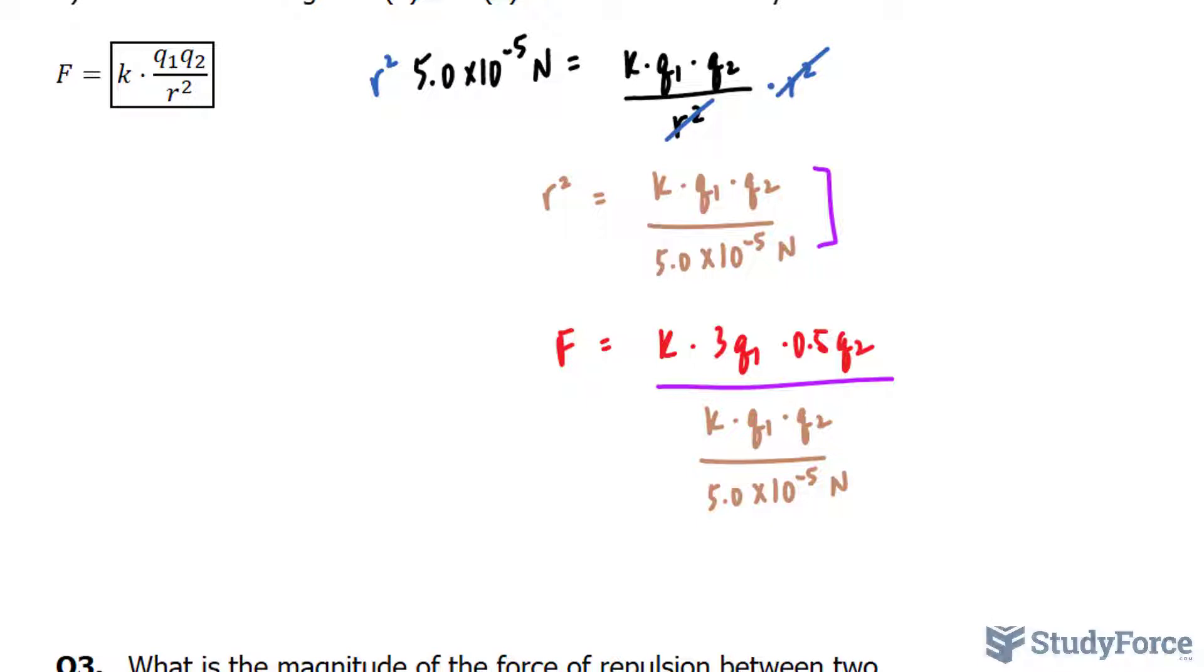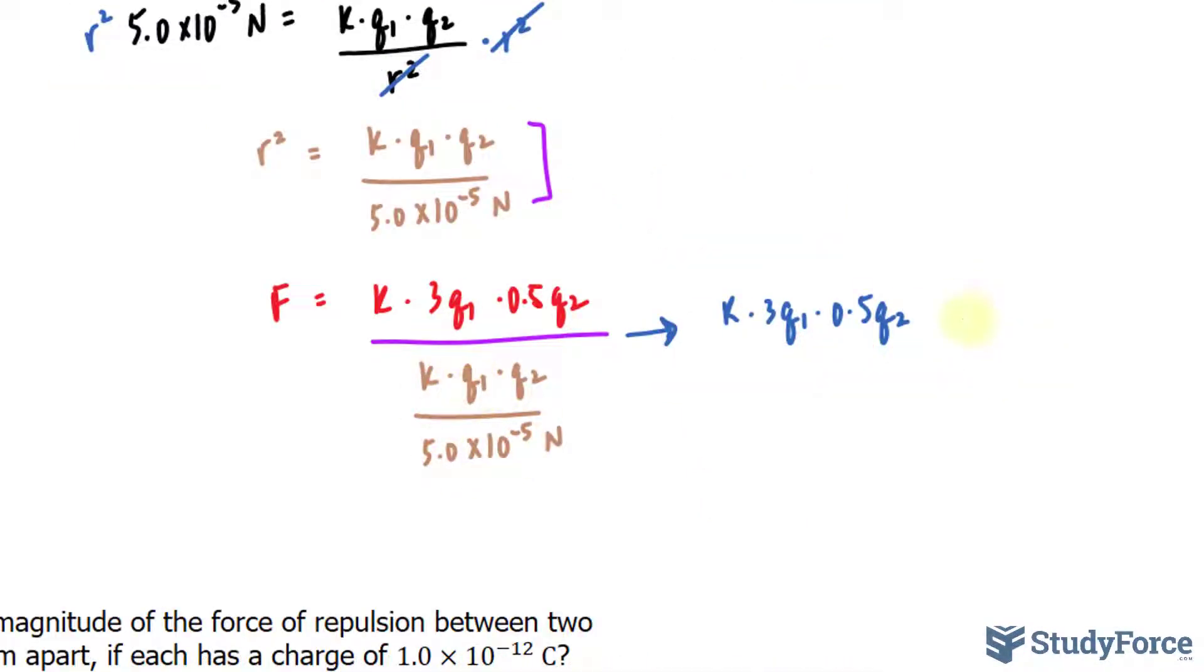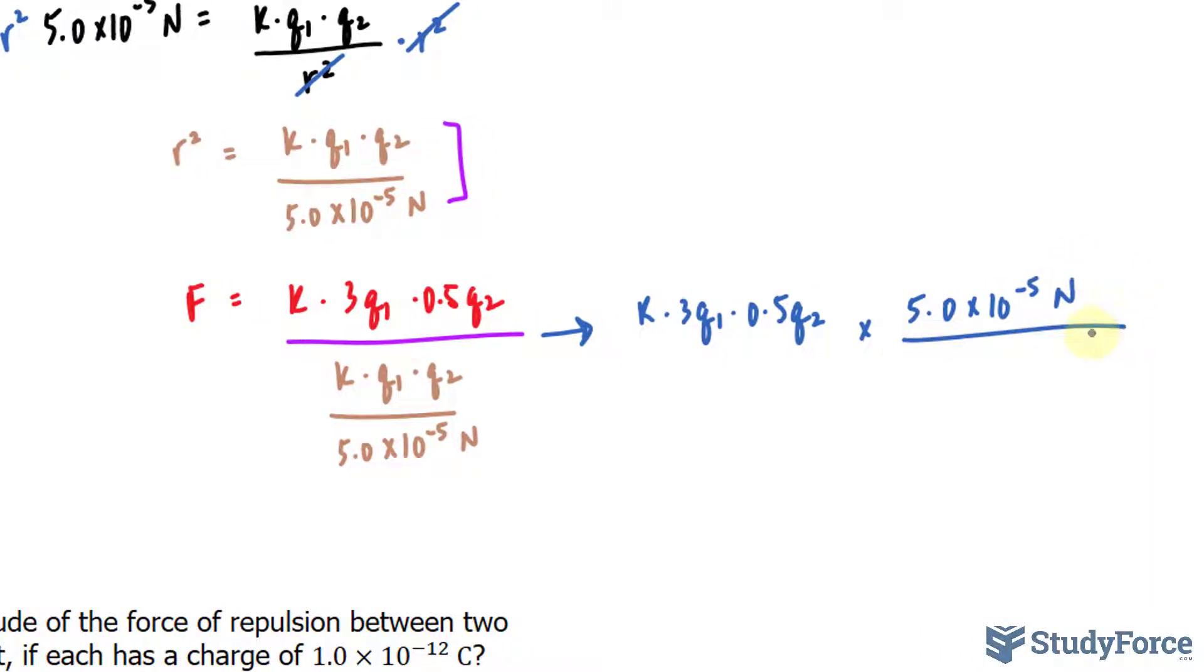Now notice what happens. If you rearrange correctly, you should end up getting the same expression on the top. And this denominator, which is a fraction, will end up looking like this, where you have 5.0 times 10 to the power of negative 5 newtons at the top. And at the bottom of this fraction, you will have k times q sub 1 times q sub 2. Notice that this k will cancel out with that k. This q sub 1 will cancel out with that. q sub 2 will cancel out with that.